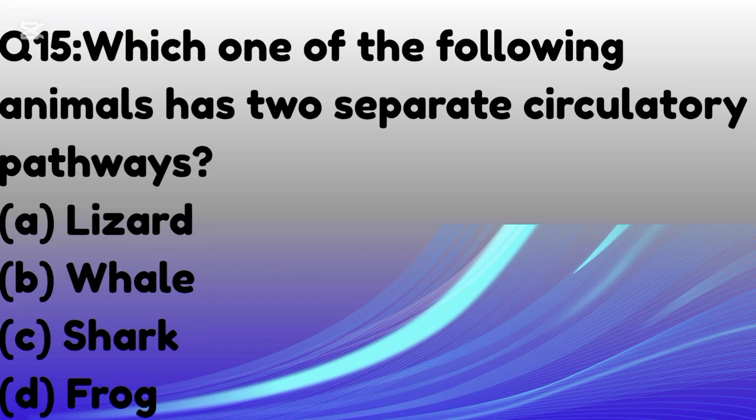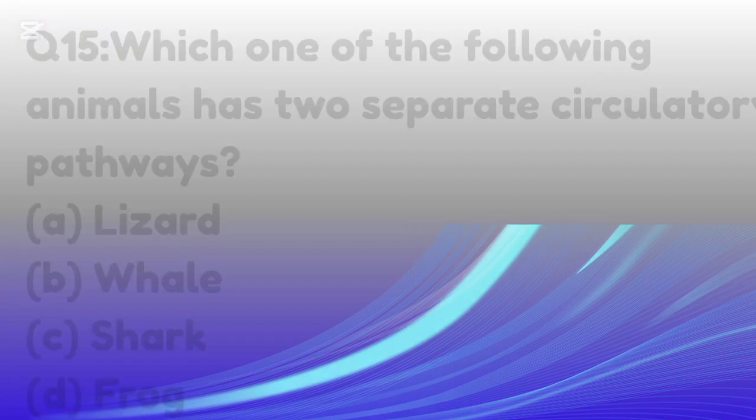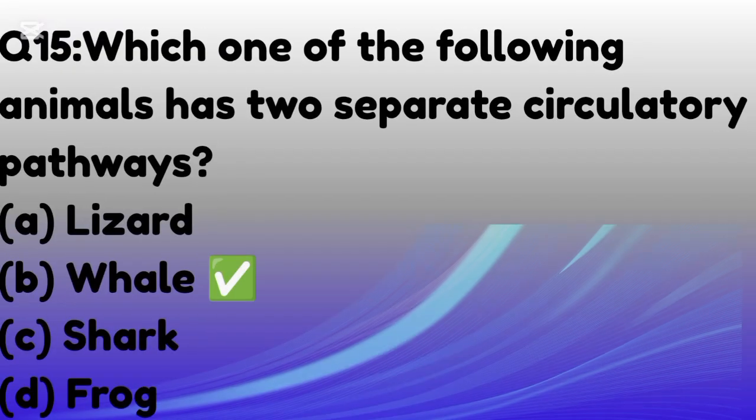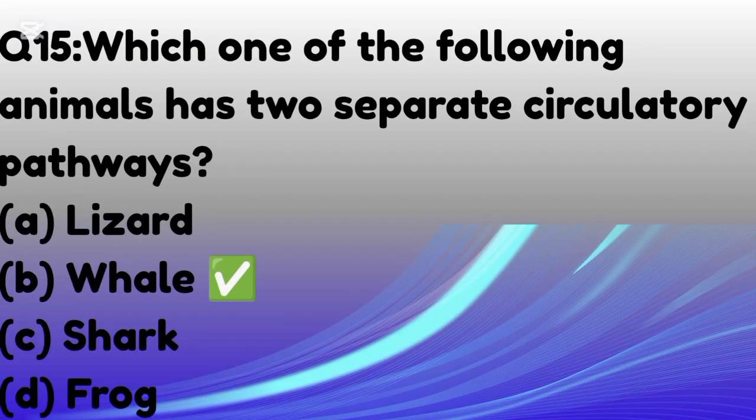Which one of the following animals has two separate circulatory pathways? The correct option is B: whale.